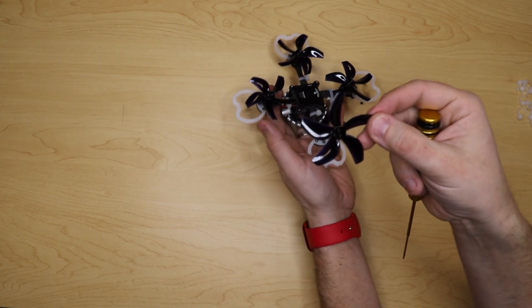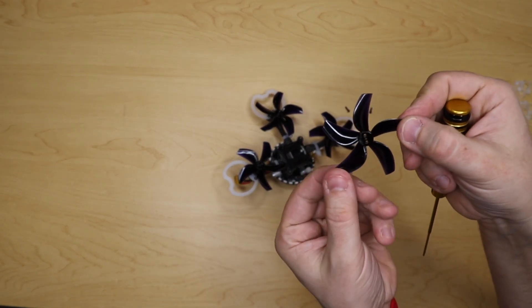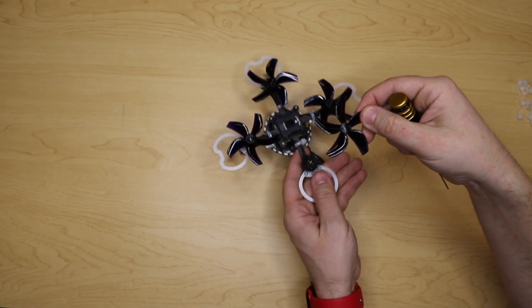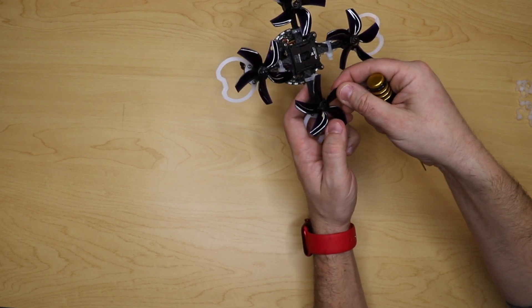And you'll see here on the propeller that there are three holes in the middle. You are going to be putting this middle hole pin into the motor right here.